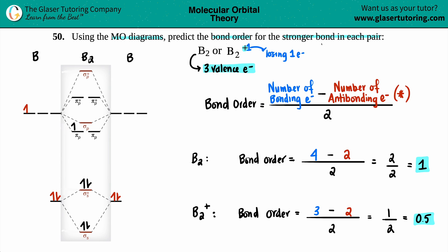We have a bond order of one for B2 and a bond order of 0.5 for B2+. The stronger bond is always the higher bond order, so whichever gives you the higher bond order, that's the stronger bond. One is greater than 0.5, so the stronger of the two is B2.